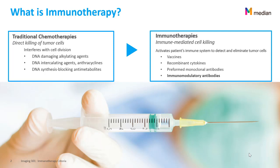Traditional chemotherapies involve the direct killing of tumor cells and therefore interfere with cell division. When the treatment works, tumors tend to shrink. With immunotherapy treatments, the immune system is activated to detect and eliminate tumor cells.